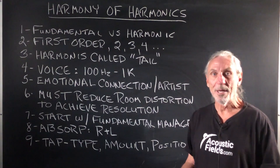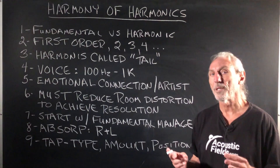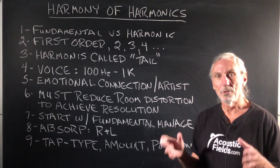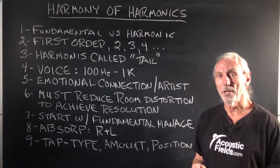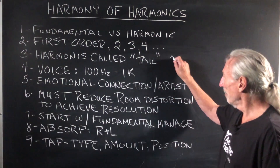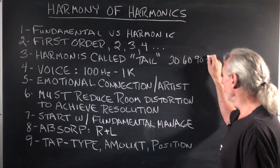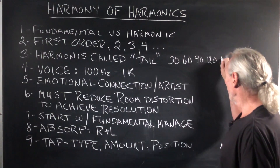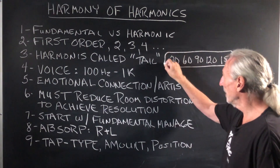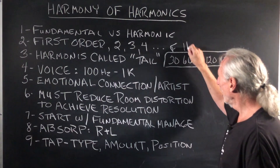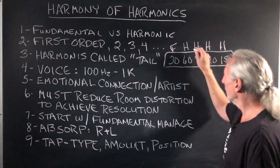We all know about fundamentals — those are the frequencies, let's say 30, 40, 50, 60 cycles. Those are our fundamental frequencies. Let's just take 30. We know that 30 has harmonics at 60, 90, 120, 150. So you can see that the fundamental of 30 Hz has a harmonic series that moves up through the frequency range.